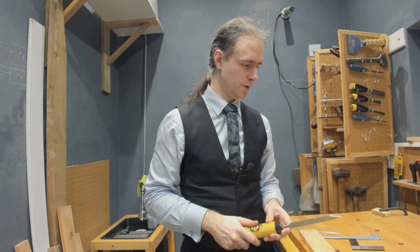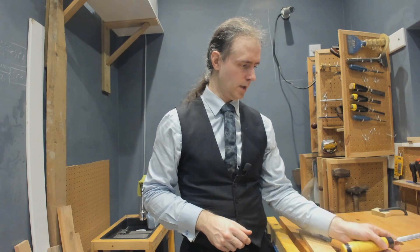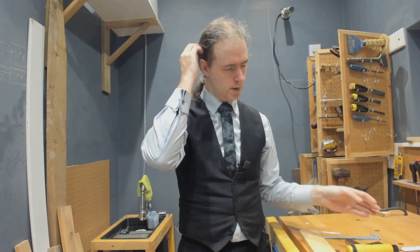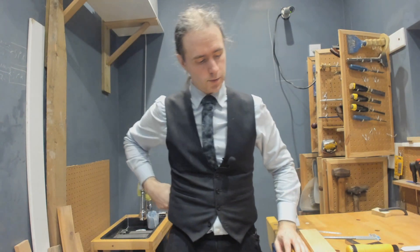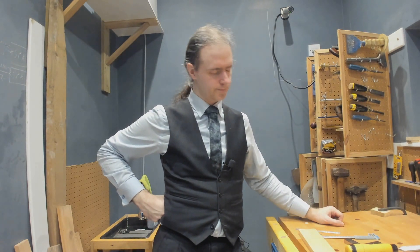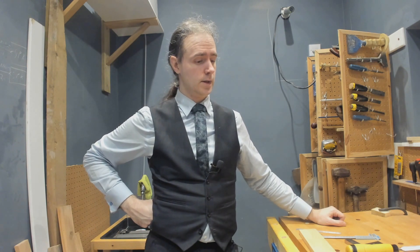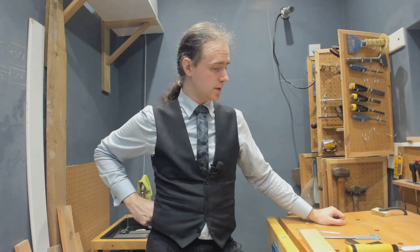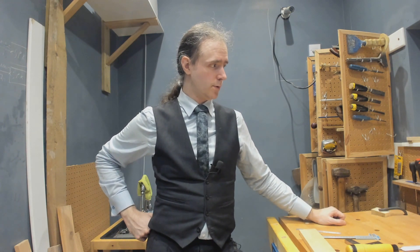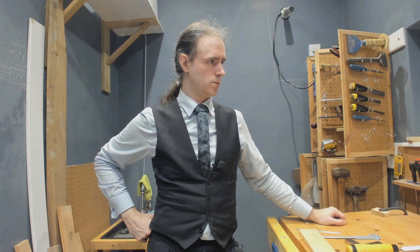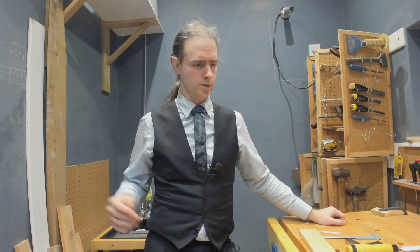If I was to get a 6mm plane. A dado plane. Also enough. Planes that cut dados are called. Sorry. Planes that cut housings are called dados. Dado planes. There's no such thing as a housing plane. Although. What in America is called a dado. Here in the UK we call it a housing. I believe housing is used across Europe.